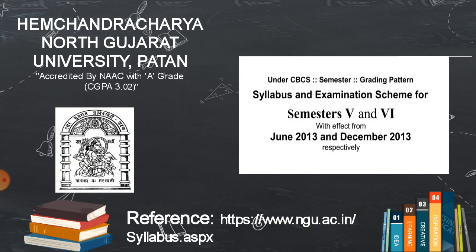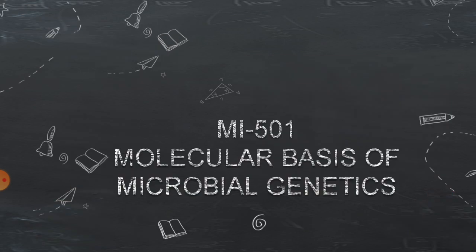The syllabus is taken from the Hem Chandra Chari North Ujjad University website under the CBCS semester grading pattern, which is effective from June 2013 and December 2013 respectively. Semester 5 is a total 24 credit point program. The theory has a total grading point of 4. There are 12 core compulsory papers and 2 subjective collective electives.